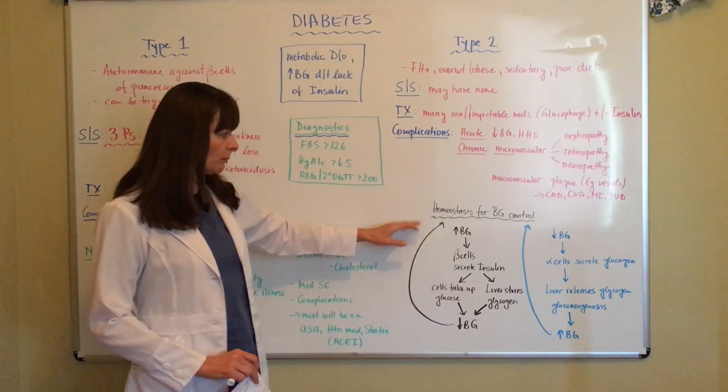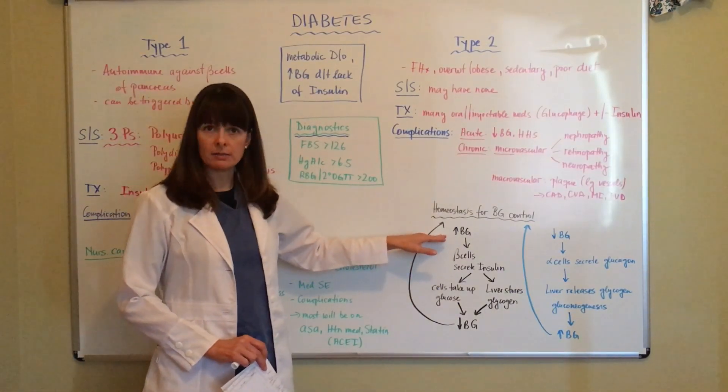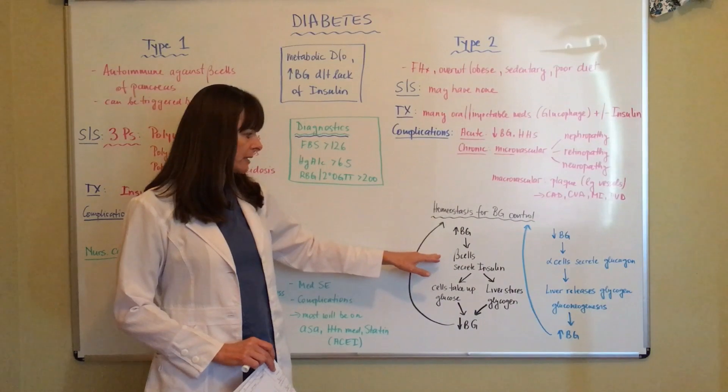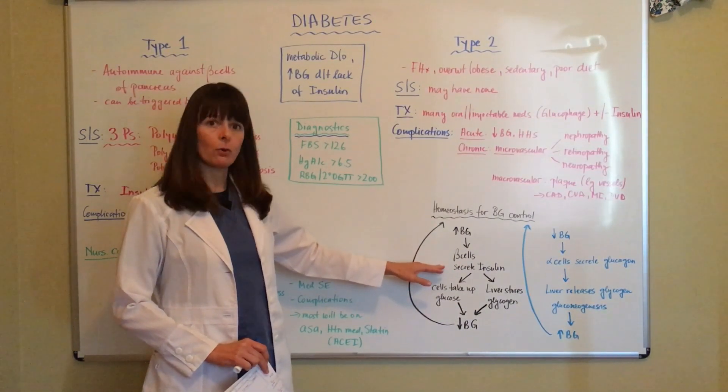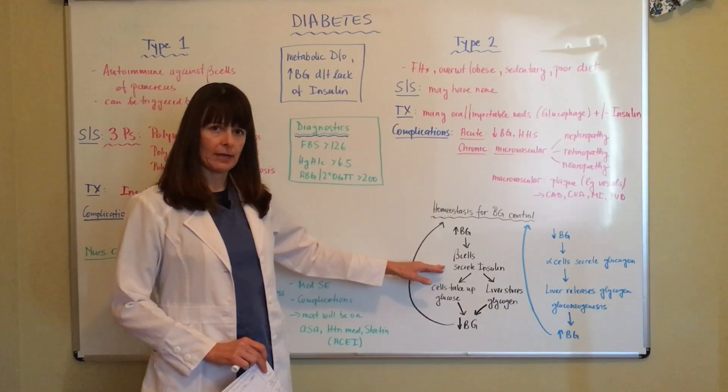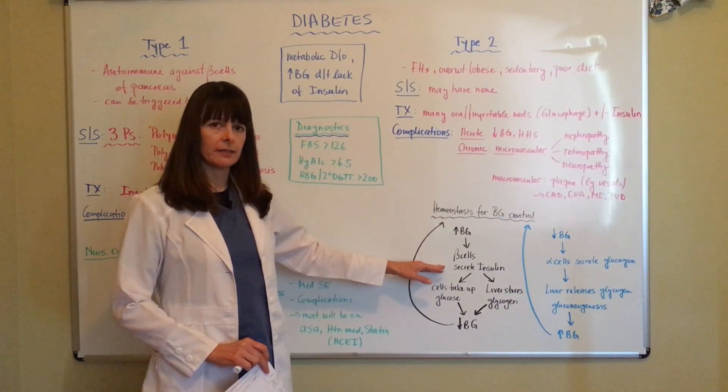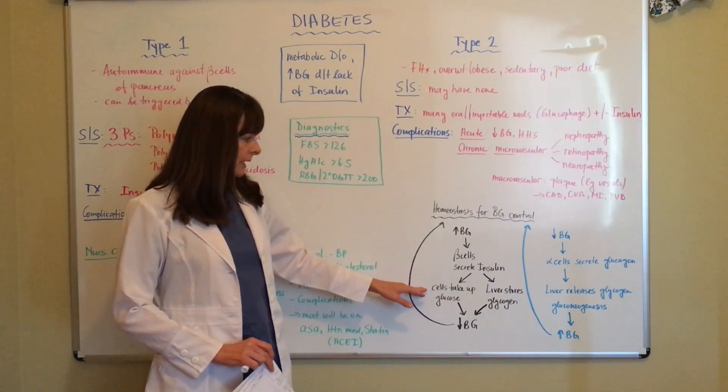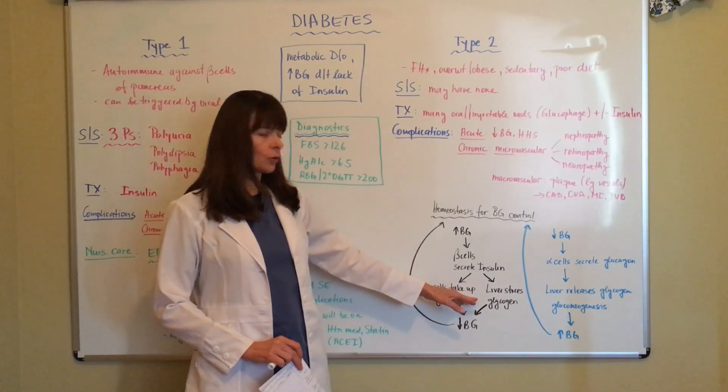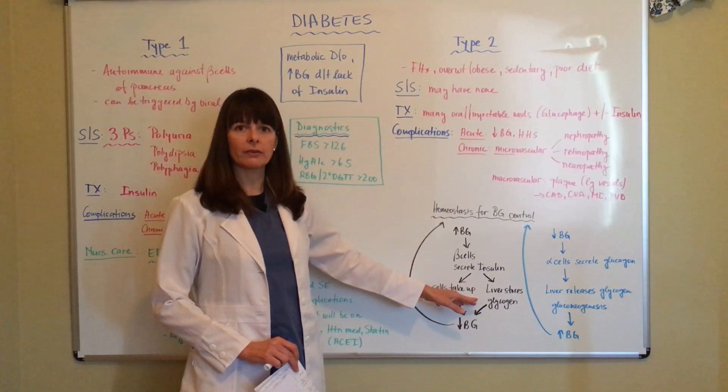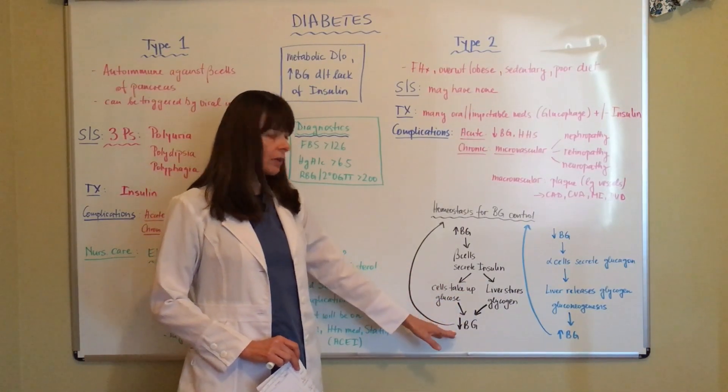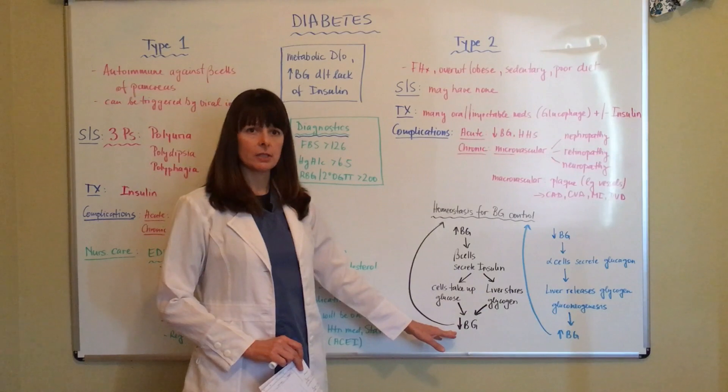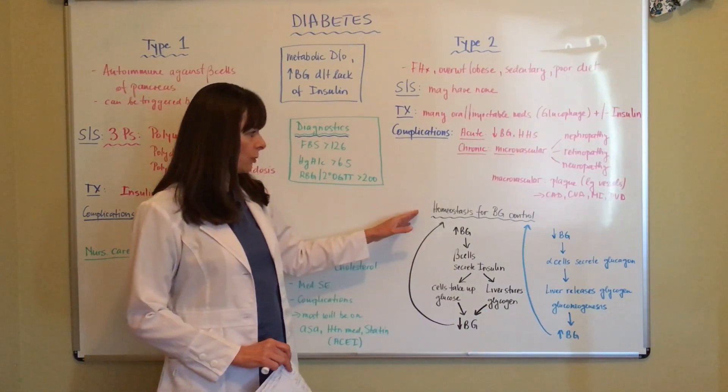Typically, when blood sugar rises, so when we eat something, the beta cells of the pancreas secrete insulin. That's released from the pancreas, and the cells can then take up the glucose, and excess glucose gets stored in the liver as glycogen. When all this happens, serum blood glucose levels decrease, and we come back to homeostasis.